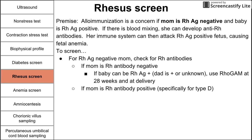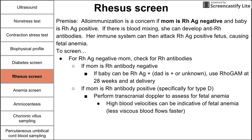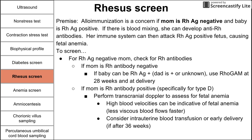If mom is Rh antibody positive, specifically for type D — which causes the most alloimmunization problems — you can perform a transcranial Doppler to assess for fetal anemia. High blood velocities in the transcranial Doppler can be indicative of fetal anemia, because less viscous blood flows faster. You might also consider an intrauterine blood transfusion, or early delivery if baby is older than 36 weeks gestation.